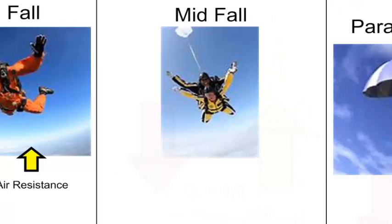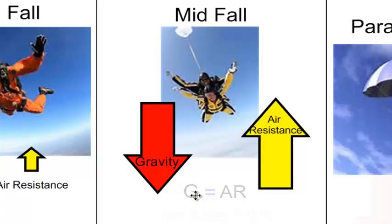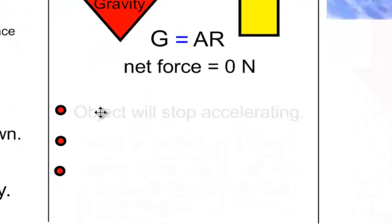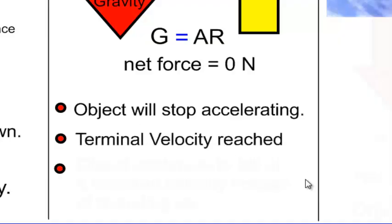The upward force — which is the air resistance — continues to increase until mid-fall, when it becomes equal to the downward force of gravity. The net force ends up being zero because both forces are equal and cancel each other out. The object stops accelerating at this point. It doesn't freeze in the air, but it stops going faster and faster. Terminal velocity has been reached.